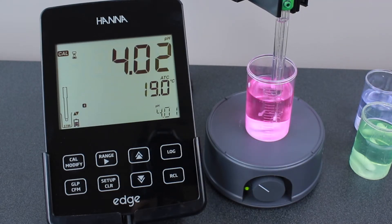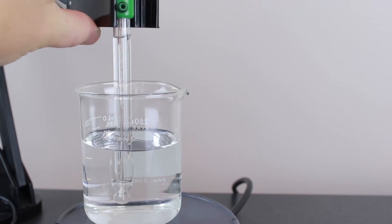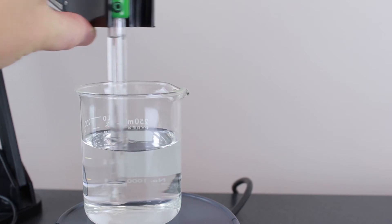Once stable, press confirm and the meter will ask for your second calibration point, pH 7.01. Rinse the electrode with deionized water and place it into the buffer.